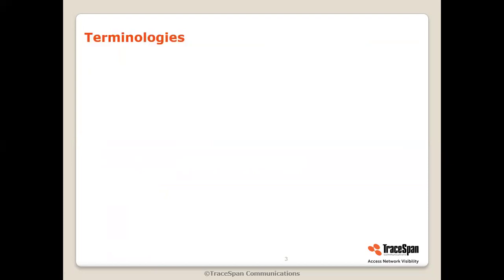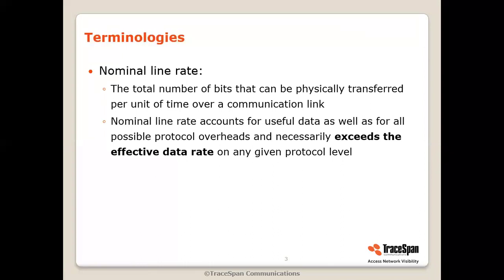So let's talk about a few terms before we go into the details. The first term is nominal line rate, which means the total number of bits that can be physically transferred per unit of time over a communication link. It accounts for the useful data as well as for the overheads, so it necessarily exceeds the effective data rate because of those overheads.